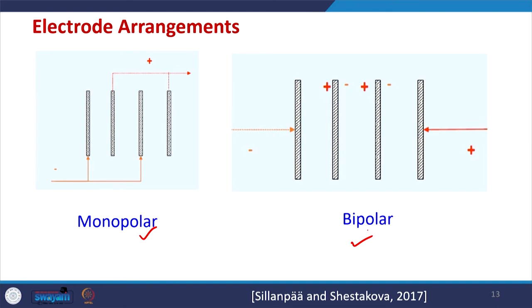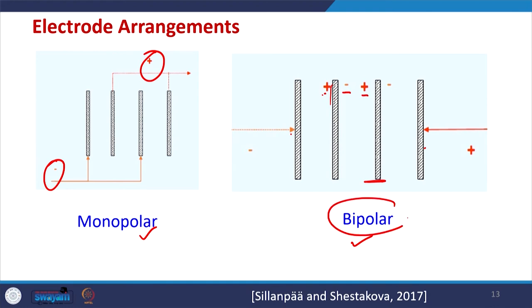Each technique will be discussed in more detail in electrochemical treatment. There are different arrangements of electrodes: one is called monopolar and another is called bipolar. For example with 4 electrodes, we can connect 2 to the negative and 2 to the positive — this is the monopolar configuration. Alternatively, we connect only 2, where one electrode surface is negative with respect to one side and positive with respect to the other — this is the bipolar configuration.